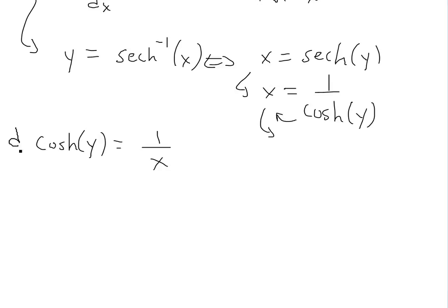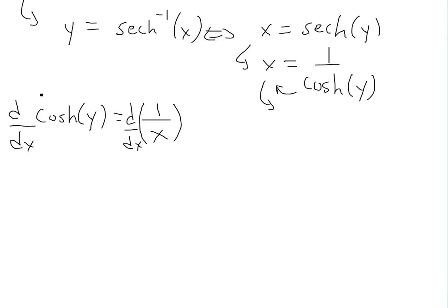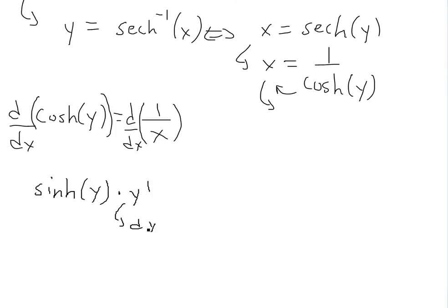Now we take the derivative of both sides using implicit differentiation. We can do this because both sides are equal, and if they're equal, their derivatives are equal. On the left side, the derivative of hyperbolic cosine of y — as shown in an earlier video — is hyperbolic sine of y. Since y is a function of x, we apply the chain rule, giving us hyperbolic sine of y times y prime (dy/dx).